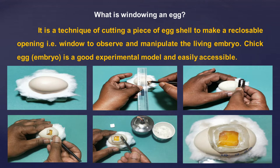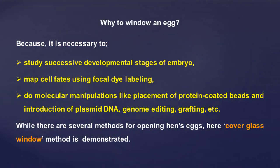Chick egg is a good experimental model and easily accessible. Next, why to window an egg? Because it is necessary to study successive developmental stages of embryo, map cell fates using dye labeling, do molecular manipulations like placement of protein-coated beads and introduction of plasmid DNA, genome editing, grafting, etc.